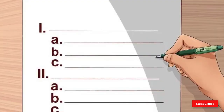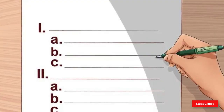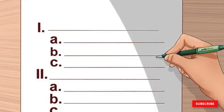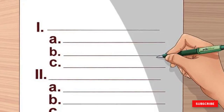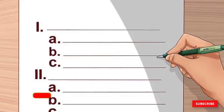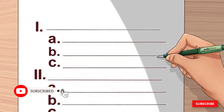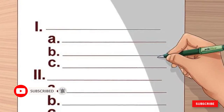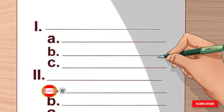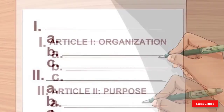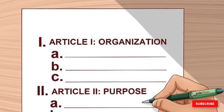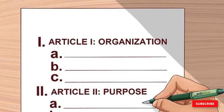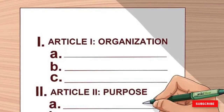Bylaws are typically written with section headings called articles and paragraphs called sections. This structure will make your bylaws more readable and standardized with other bylaws. This format also facilitates finding information on voting rules, committees, and other elements you may have questions about as the organization gets going.